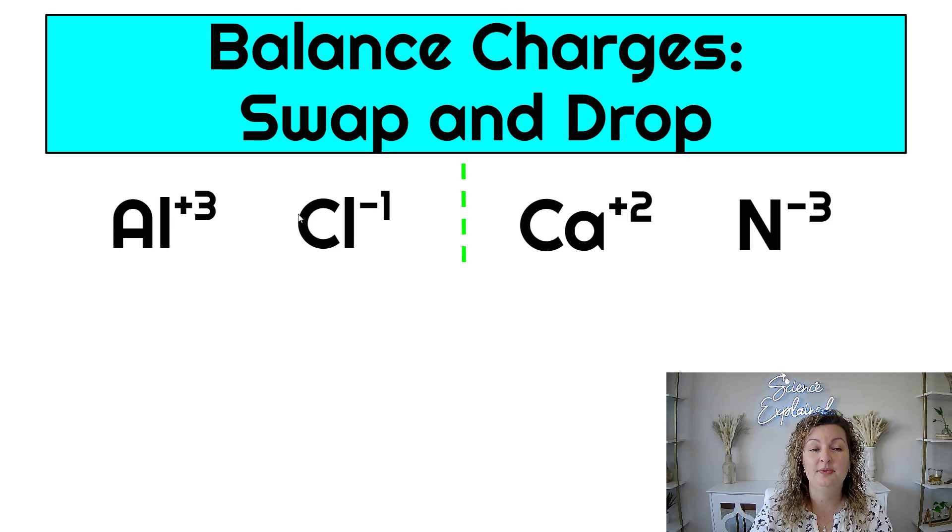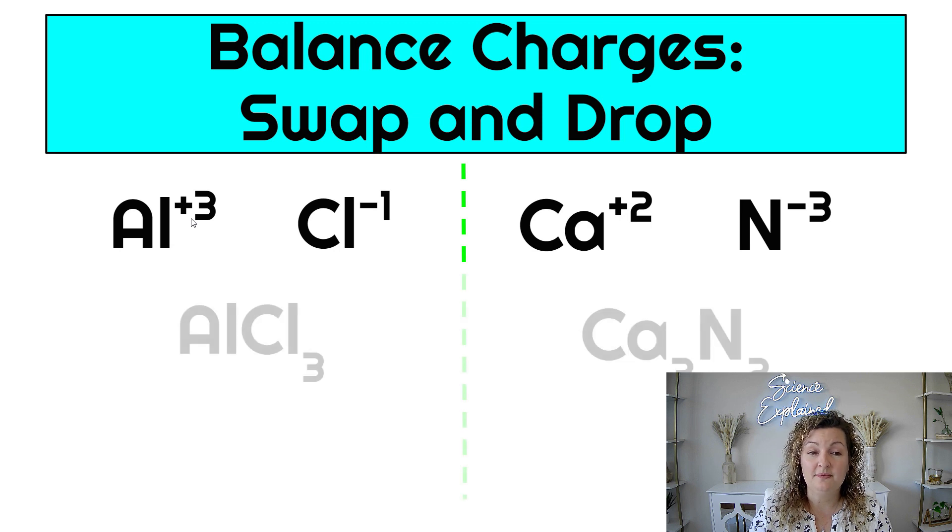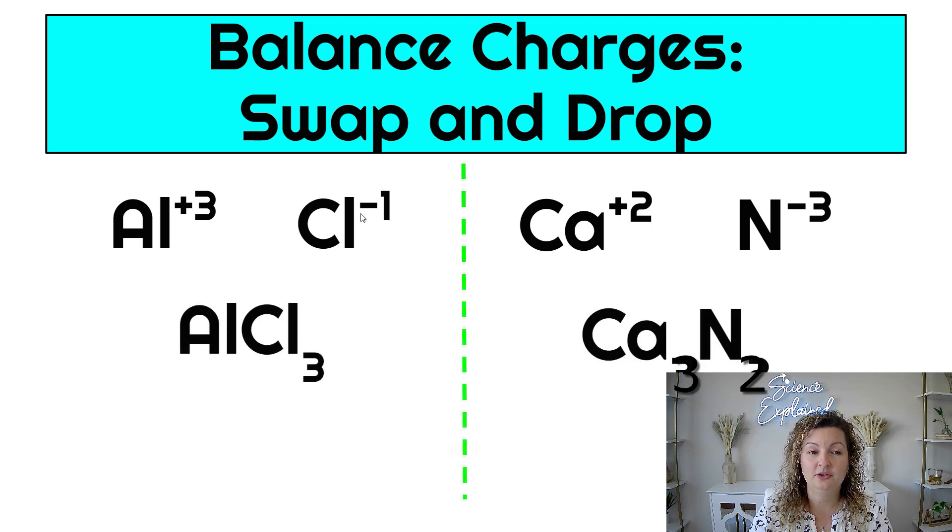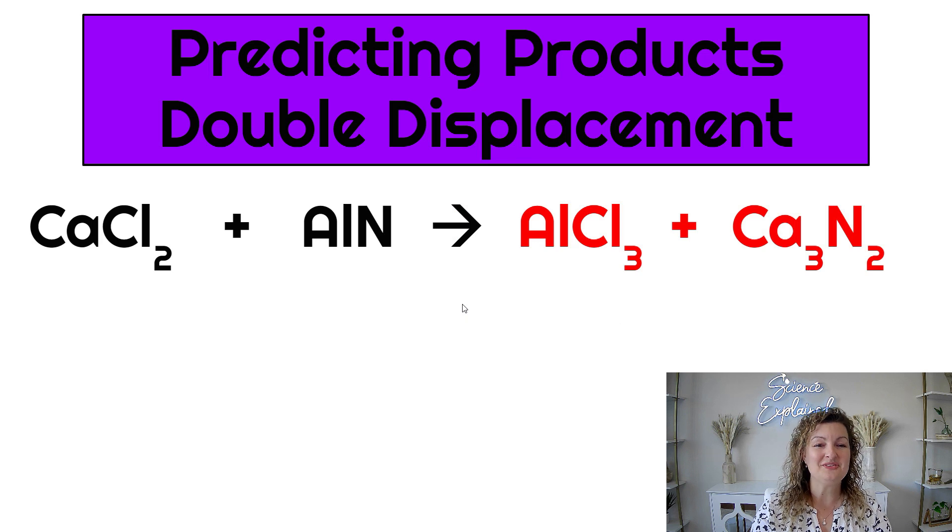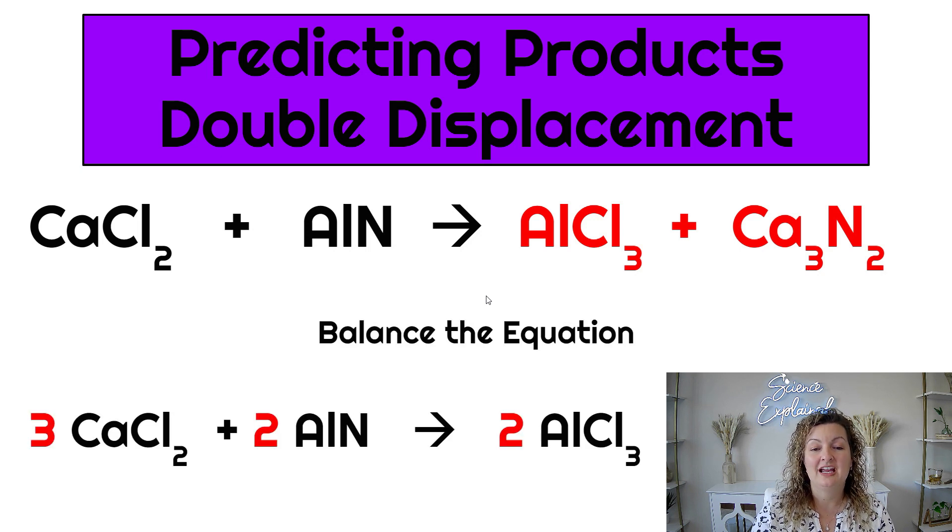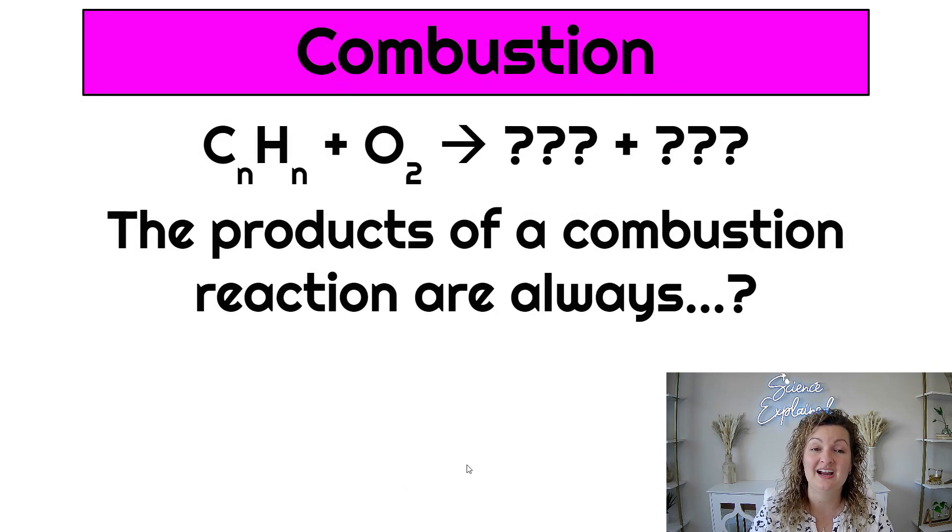So I went ahead and I paired them and I put their oxidation numbers next to them. So we're going to do swap and drop. So the three comes down and the one comes down. You can see what we have. And the two comes down and the three comes down and you can see what we have. This is Ca₃N₂. Sorry about that, you guys. My face is again in the way a little bit. So once we get that done, remember that's not our last step. Our last step is to balance our chemical equation and we end up getting this as our result. So check your work. Make sure you're getting it right. And let's talk about combustion reactions.